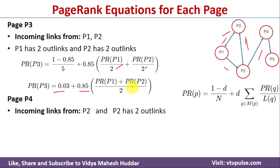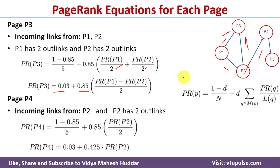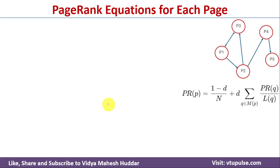Next, we find the page rank for P4. The incoming link to P4 is from P2, and P2 has two outbound links (to P3 and P4). So: PageRank(P4) = 0.03 + 0.85 × [PageRank(P2) / 2], which simplifies to: PageRank(P4) = 0.03 + 0.425 × PageRank(P2).